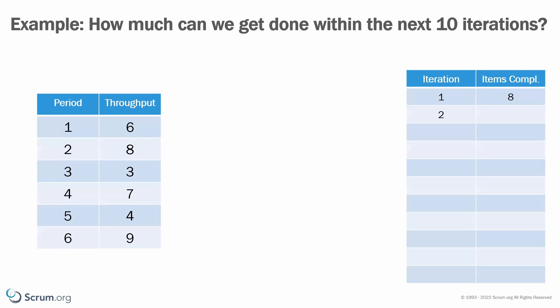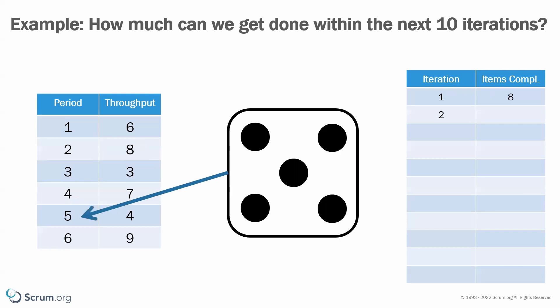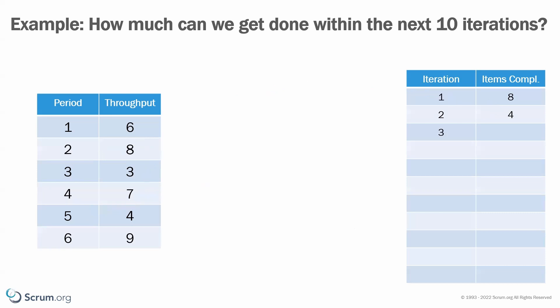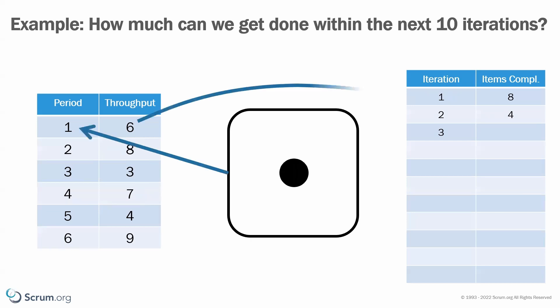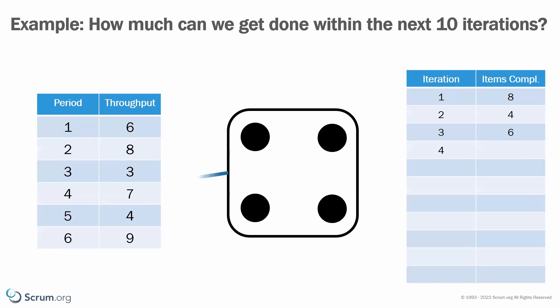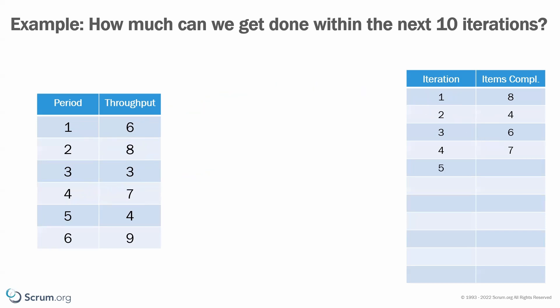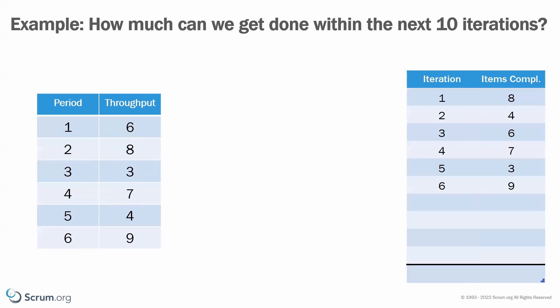Then we repeat this. In the next scenario we roll five, so we go to period number five and draw the throughput of four into the result table. We repeat again — this time it's a one, but we put the six into our result. We have a four, and so on. We do this multiple times, completing all ten iterations we want to forecast. Once we have run this for ten iterations, we summarize the numbers in the table on the right, and in this case the sum for this simulation is 58.